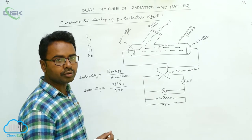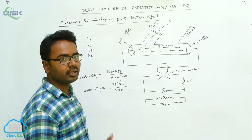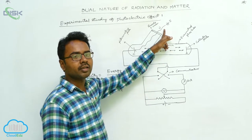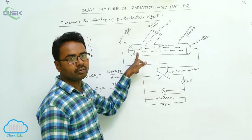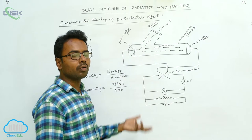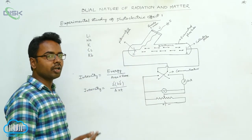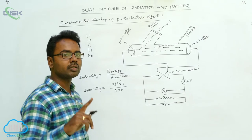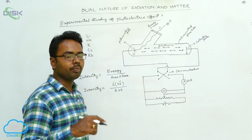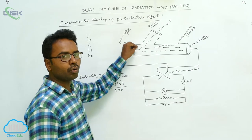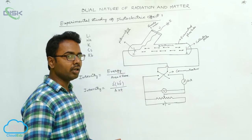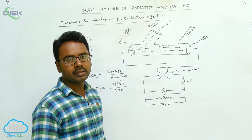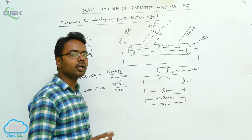Now we study the variation of photocurrent with intensity of incident light. As we increase intensity, more photons strike the emitter plate, so more electrons are released. This is because photoelectric emission is a one-to-one process — one photon collides with one electron, transferring its energy. So more photons striking the photosensitive plate means more electrons are released, causing more current in the external circuit.